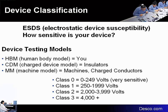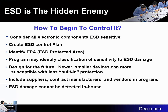The classifications that came to bear: the human body model, which is operators or people; the charge device model, which would be insulators or devices at a workstation; and a machine model for automated machines used in electronic assembly. Classifications are currently set up as class 0 from 0 to 249 volts, class 1 from 250 to 1999, and on up. We now even have class 00 and class 000, getting down to 0 to 50 volts for a class 000 device.